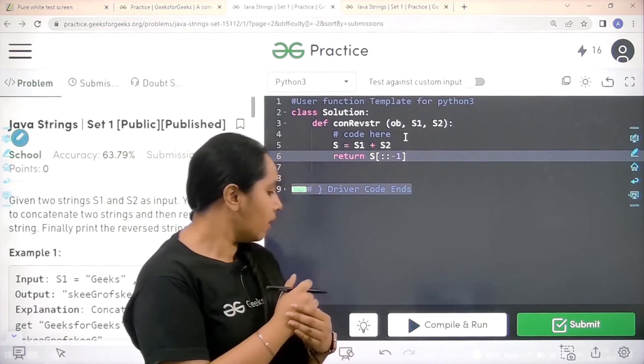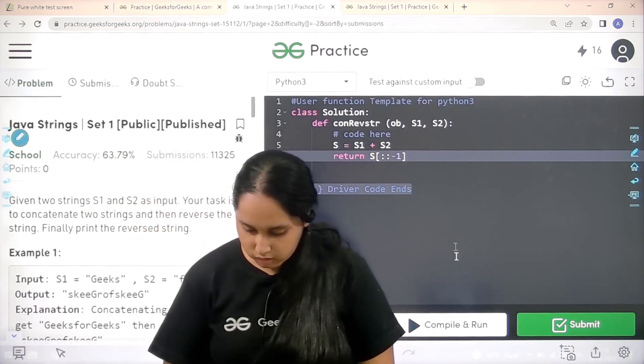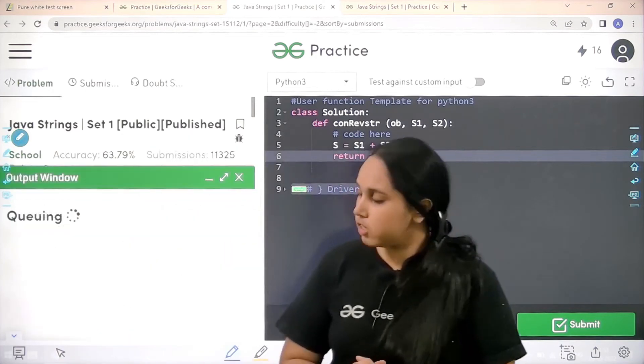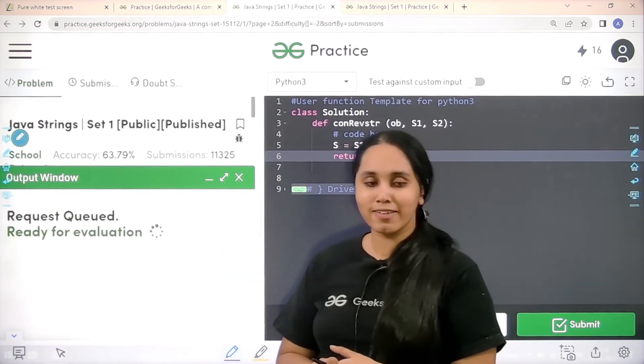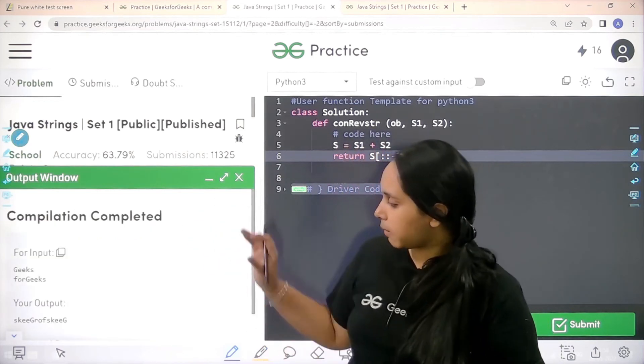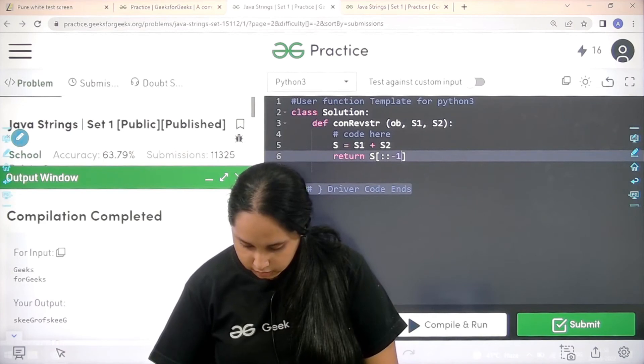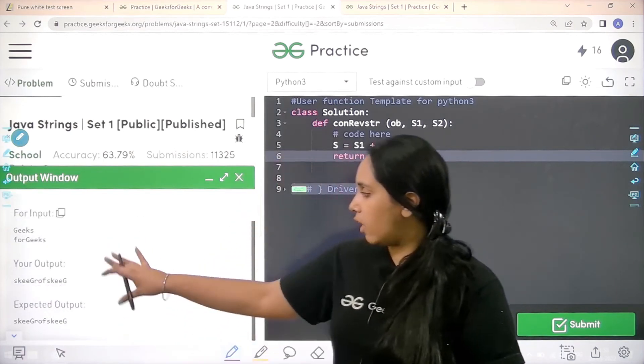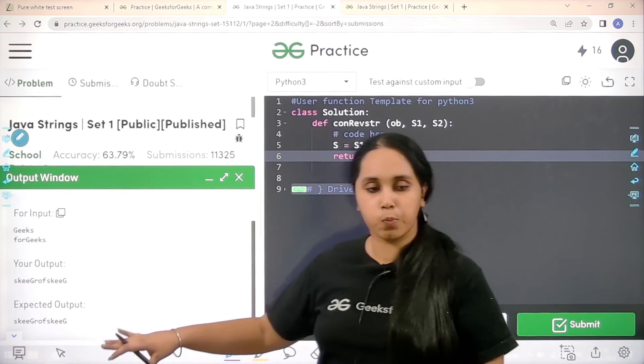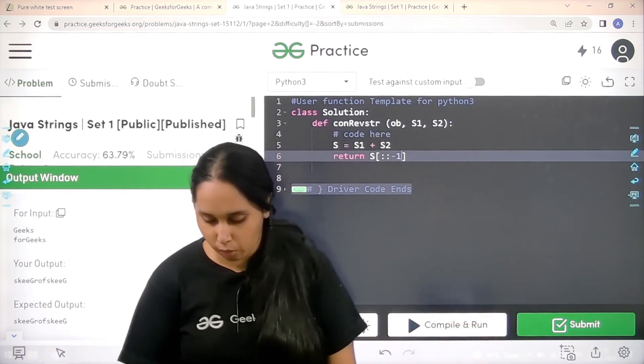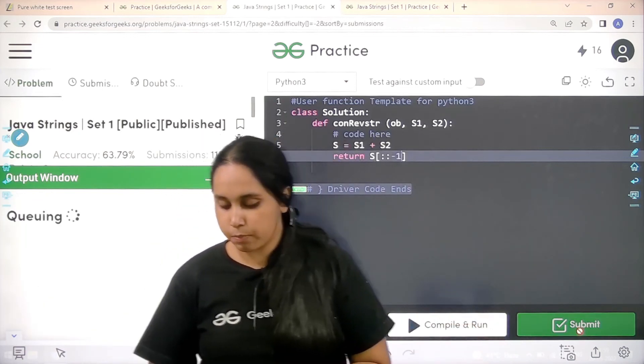So let's test it out by clicking on compile and run. So it is getting compiled. Let's wait. The compilation is done. Let's check. So see, my output is matching with the expected output. So now I would submit the problem.